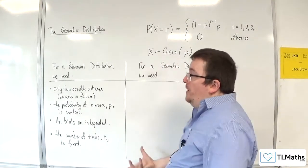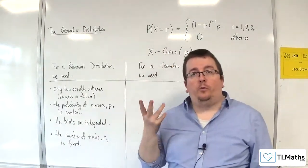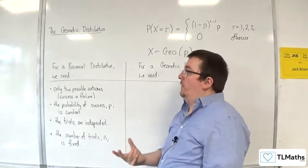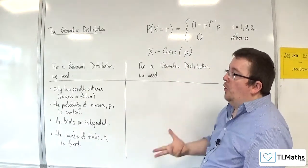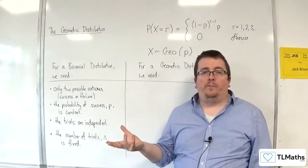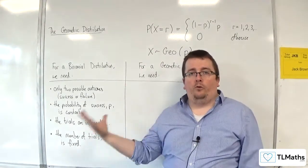For a binomial distribution, there are a few things we know have to be the case. First of all, there are only two possible outcomes: success or failure.